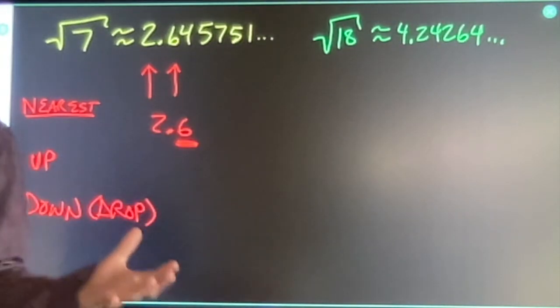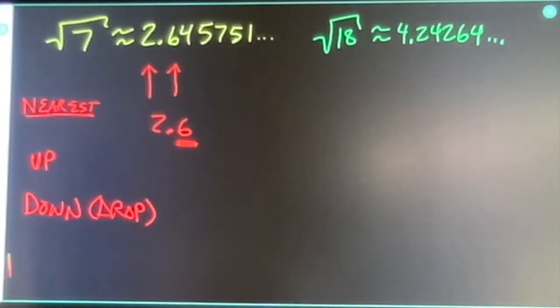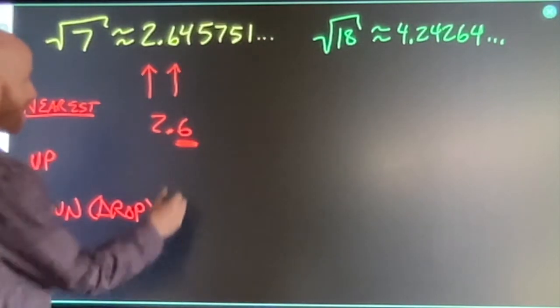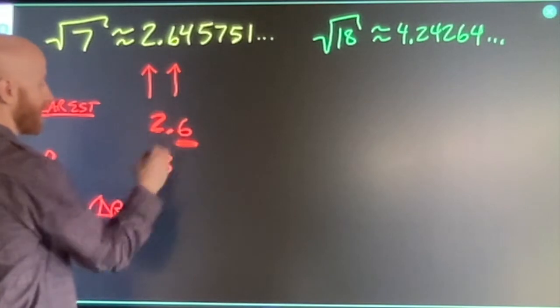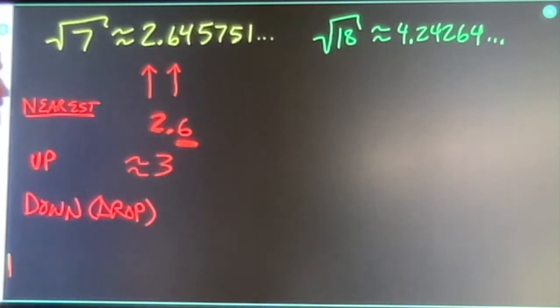This number, if it's five or larger, indicating one half or larger, then I round up. I take my two and I say this is about three. Two and a half or two and more than a half is about three.